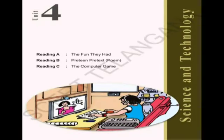Hello children, we shall discuss a new lesson. Before going into the lesson, let us see the style sheet. What do you see in the picture? We see high technology where a girl is learning something on a computer. And what do you see along with the picture? We find Reading A: The Fun They Had, Reading B: Written Pretext Poem, Reading C: The Computer Game.